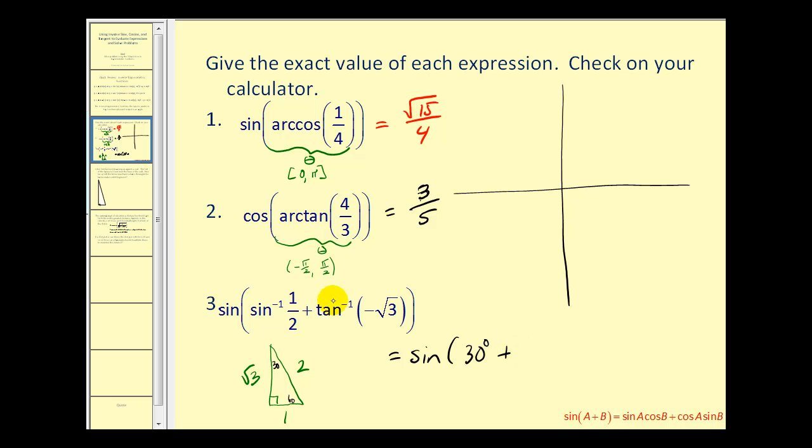now we need to find the arctan of -√3. Looking at our reference triangle, we can see that a 60-degree angle has a tangent ratio of √3 over 1 or √3. However, since we have -√3 and the inverse tangent function returns an angle between -π/2 and π/2, we're going to sketch a 60-degree reference angle in the fourth quadrant. Which means our angle θ is going to be -60 degrees.